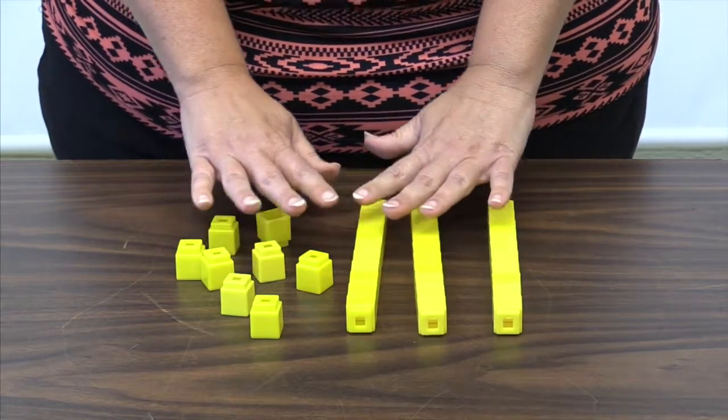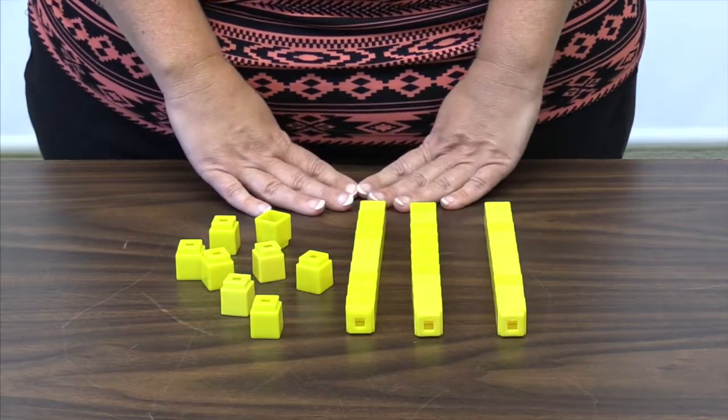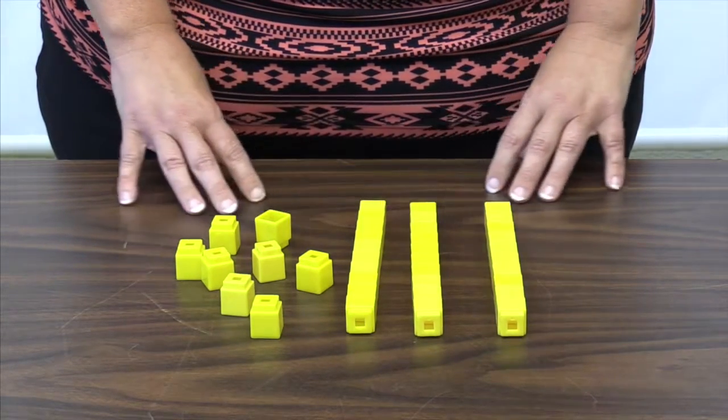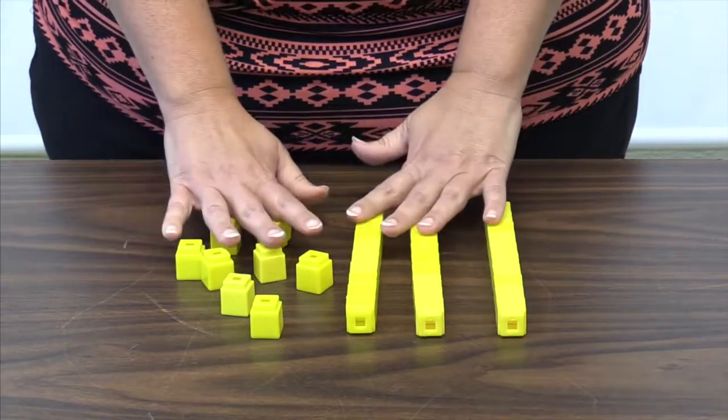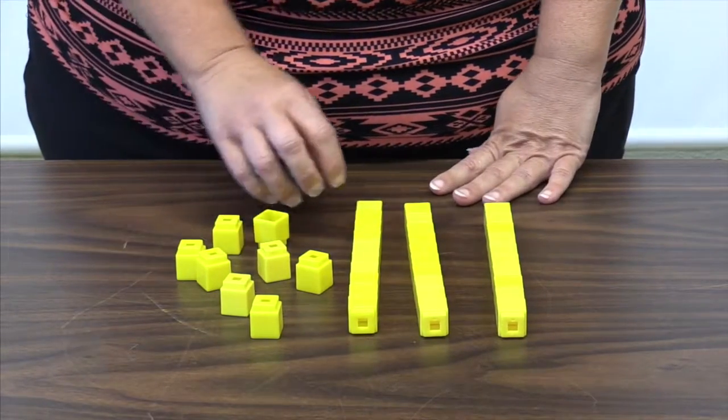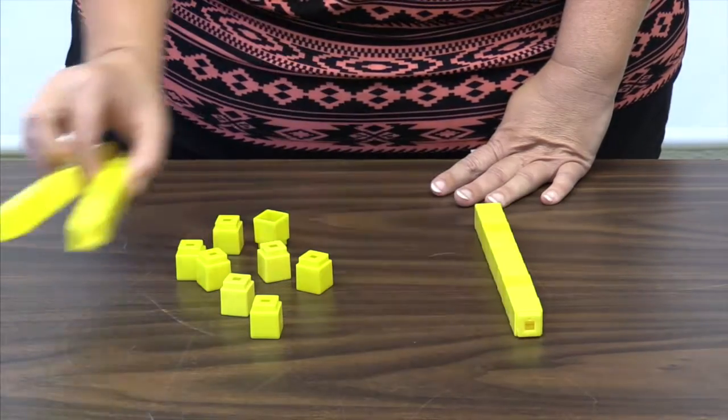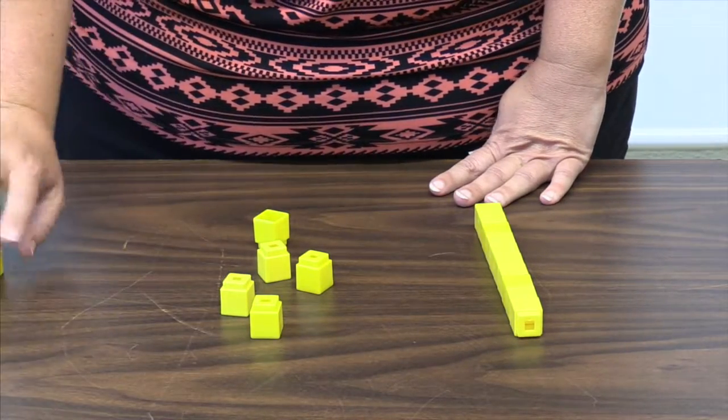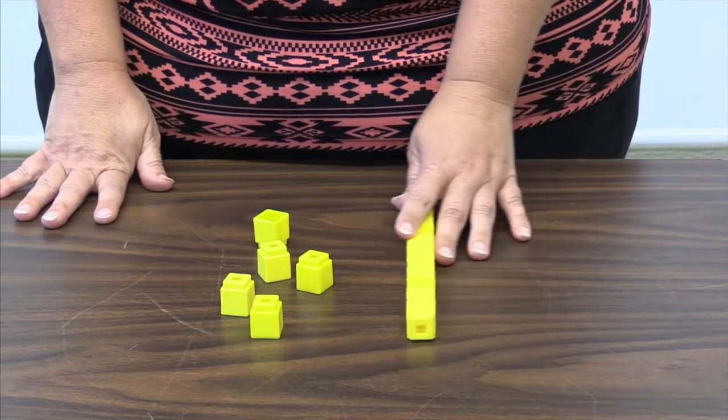There are 38 students in the gym. Ms. Hill leaves and takes her 23 students with her. How many students are left in the gym? We have modeled 38 and should simply remove two tens and three ones.